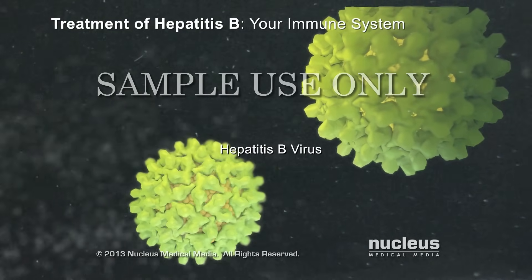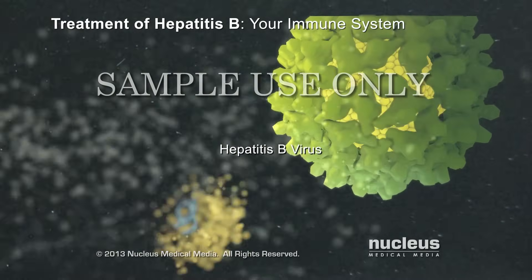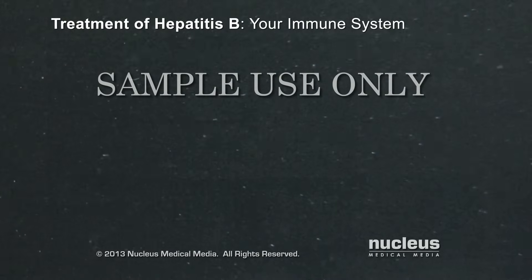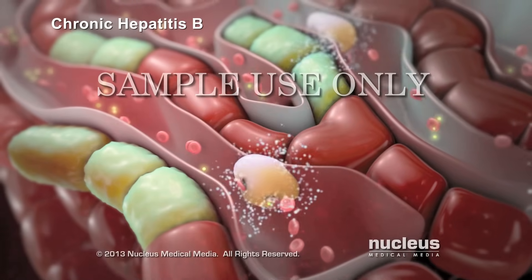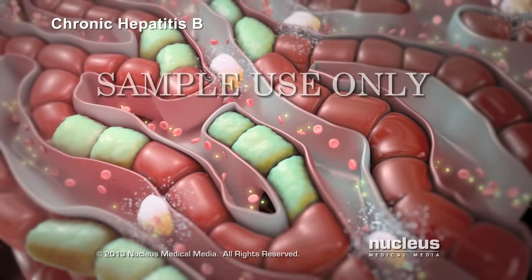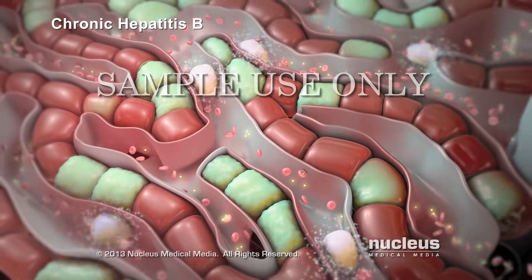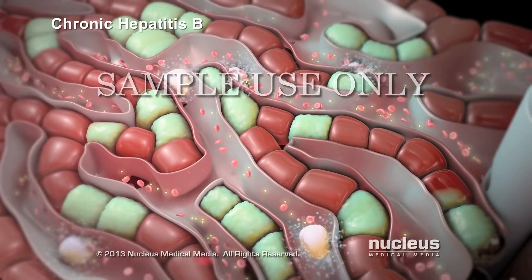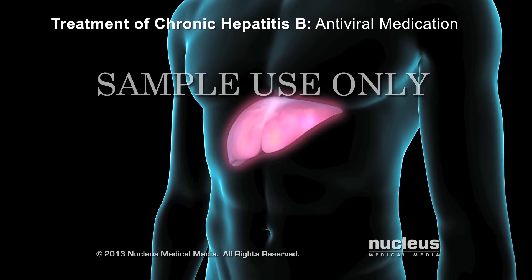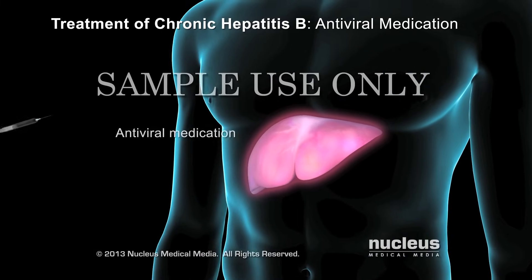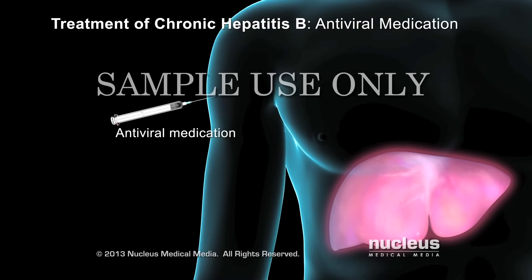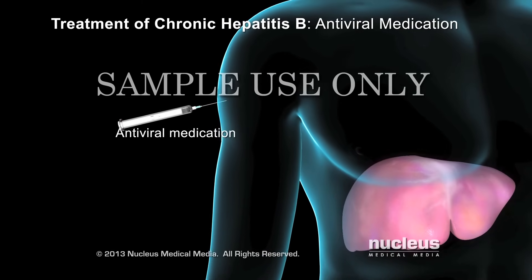If you have hepatitis B, your immune system will usually remove all the hepatitis B viruses from your body. In some people with chronic hepatitis B, particularly children, their immune cells are unable to remove all of the hepatitis B viruses. If your immune system can't get rid of the virus completely, your doctor may prescribe antiviral medication.